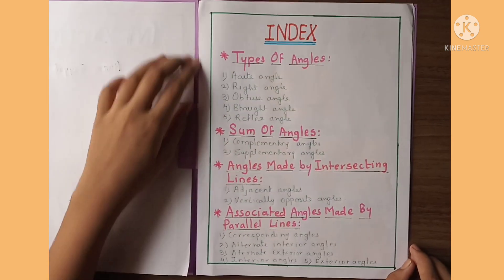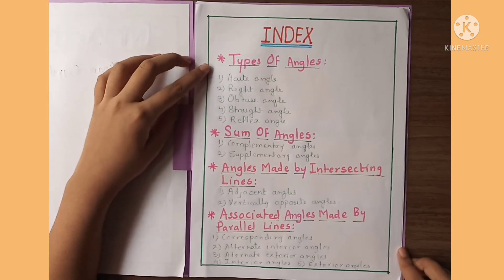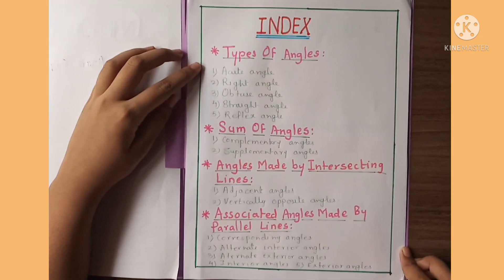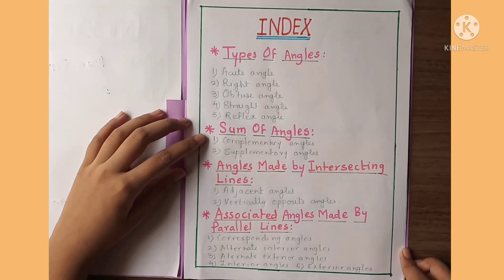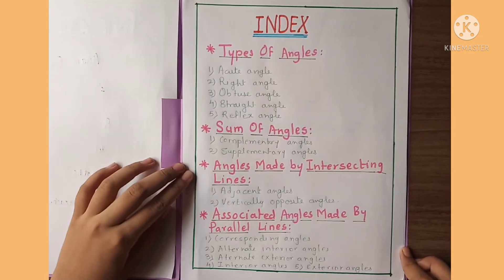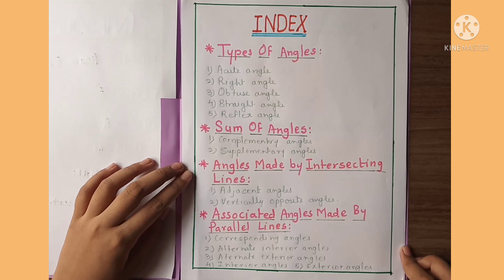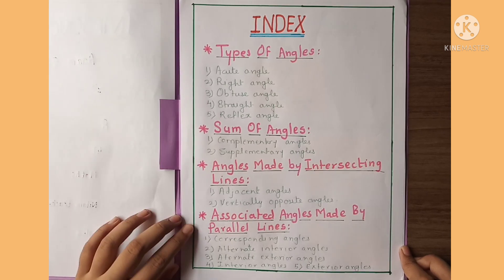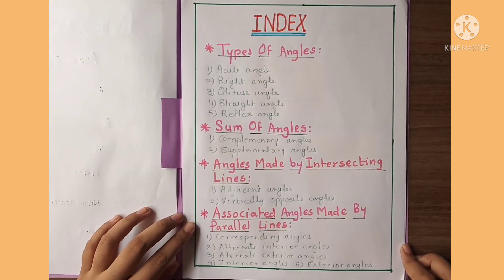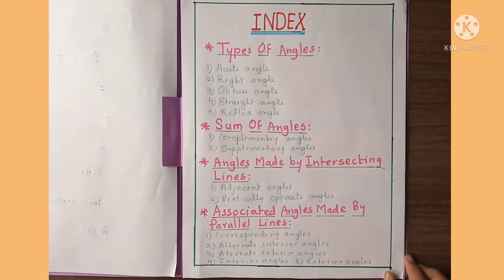Here is the index. The topics covered are: types of angles, sum of angles, angles made by intersecting lines, and associated angles made by parallel lines.